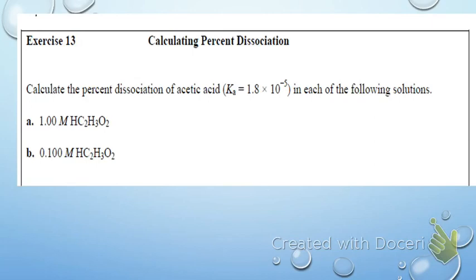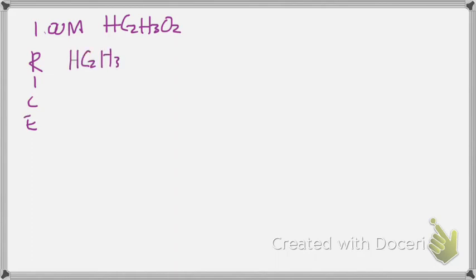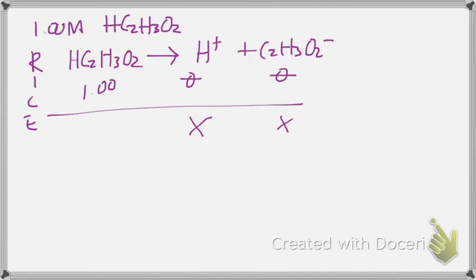So for A, I'm going to do this so y'all can see it better. So for A, we have the 1.00 molar acetic acid. So we'll do our rice table. This is 1 molar, right? This is 0, 0, but basically, and then at equilibrium, it's X, X, and then 1 minus X.